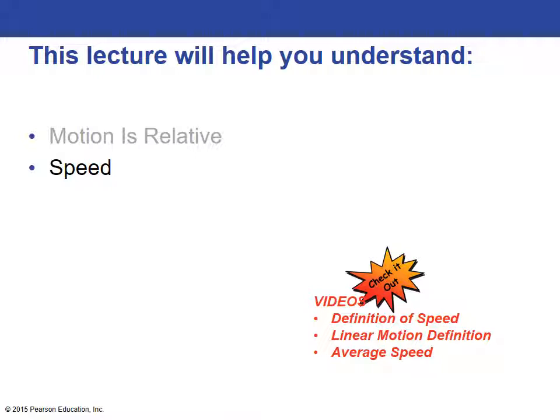Here's a place where your physics language is going to have to be precise because we're going to look at a difference between speed and velocity. In ordinary language, you might use them interchangeably. In physics, they are different and specific. This would be a good time to take a break and look at the extra video links I sent you from the textbook publisher: the definition of speed, linear motion definition, and average speed.